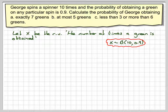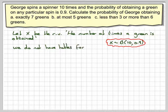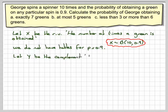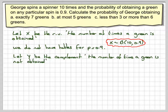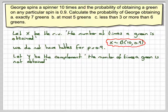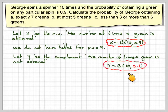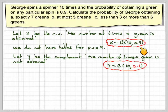However, we don't have 0.9 in the table, so we have to consider the complementary. Let Y be the complementary — the number of times a green is not obtained. Y is binomially distributed with 10 trials and a probability of success of 1 minus 0.9, which is 0.1.